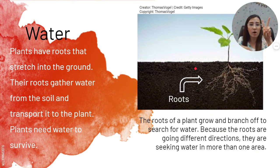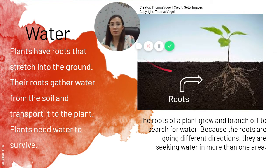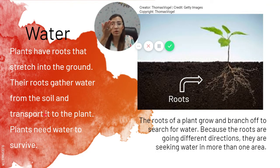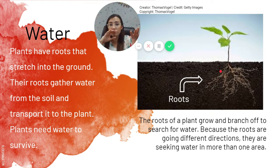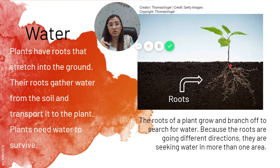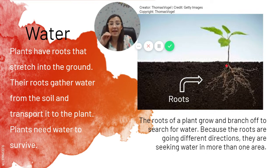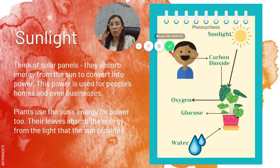The next ingredient is water. Plants have roots, and the purpose of their roots is to gather water, soak it up, and transport it up to the plant. The roots branch out in many different directions because they're trying to find water wherever they can. It's kind of like a highway system where the water travels up the roots into the plant.